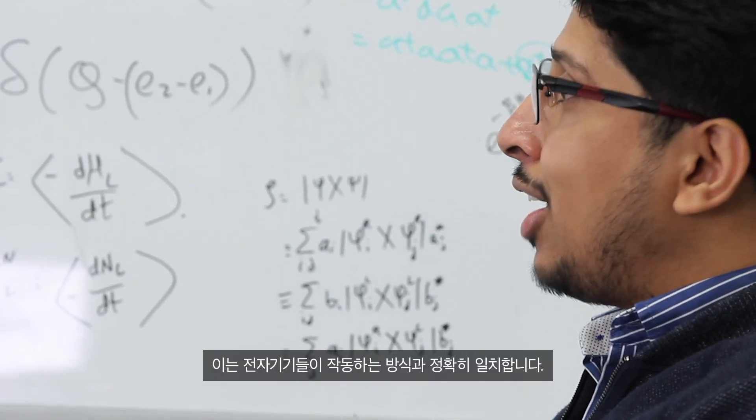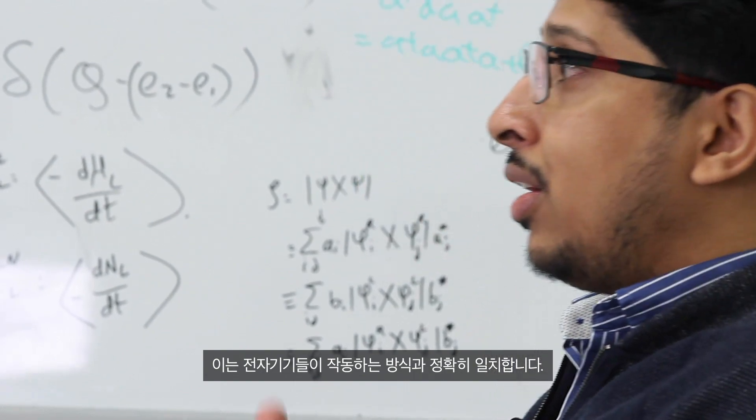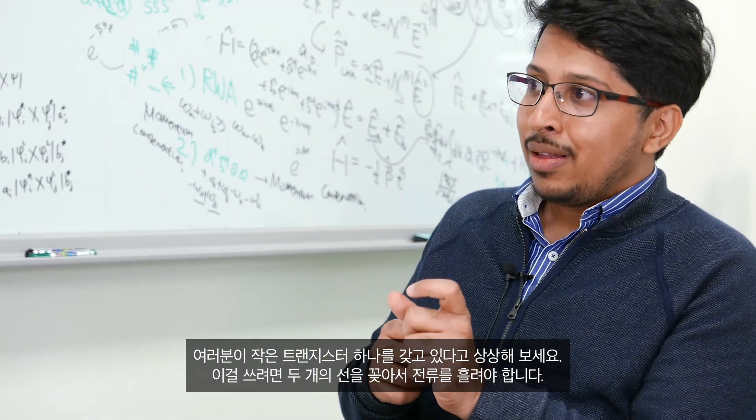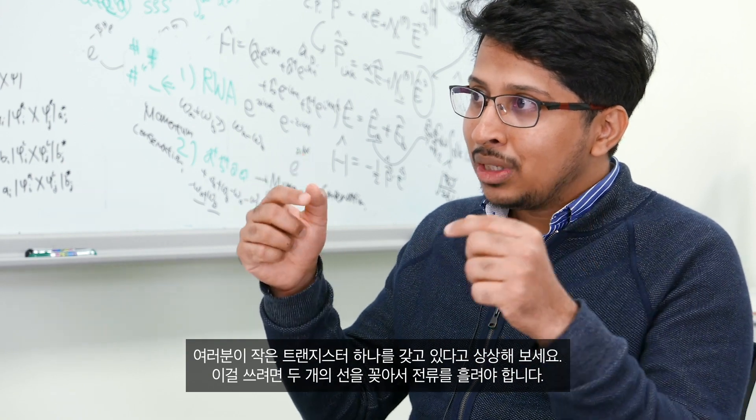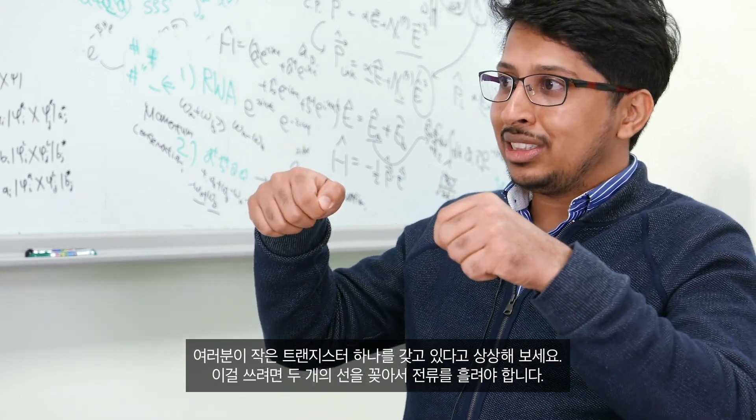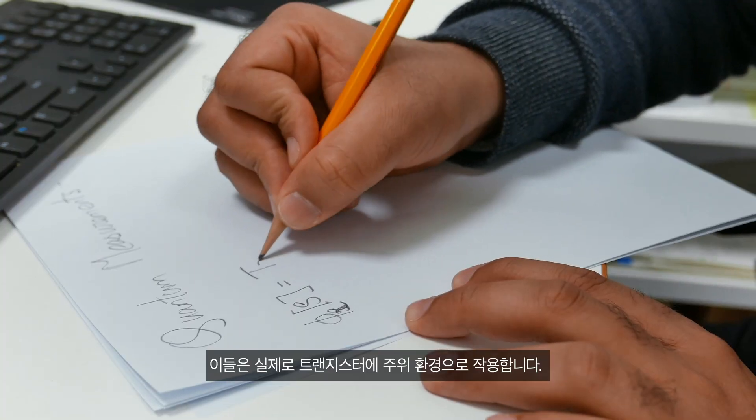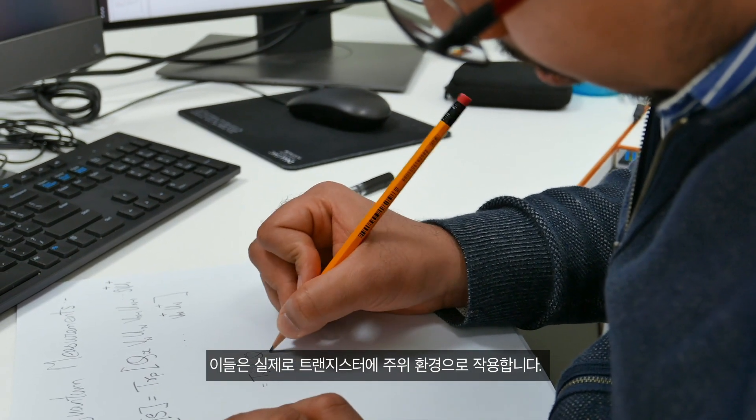This is exactly how our electronic devices also work. Imagine you have a small transistor which is somewhere and you have to connect two probes to this transistor which would help to pass an electronic current. And these are actually acting as an environment for that little transistor in the middle.